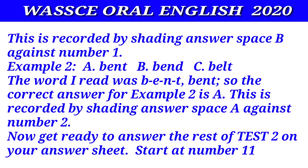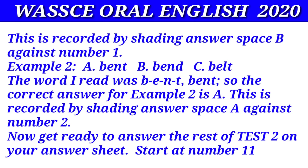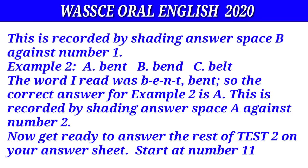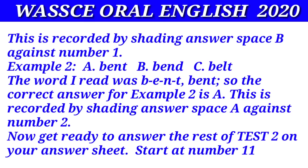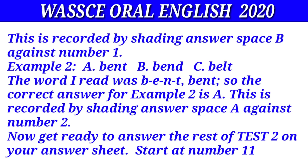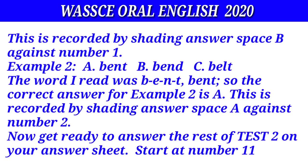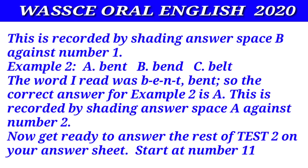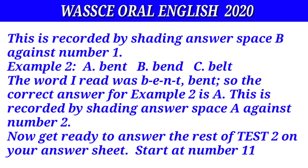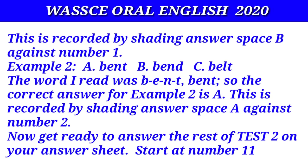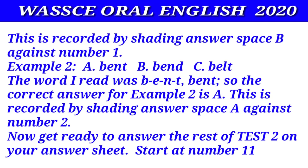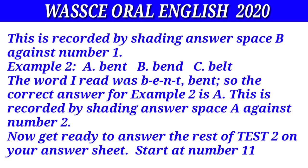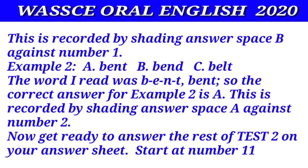Example two: bent. The word I read was B-E-N-T, bent. So the correct answer for example two is A. This is recorded by shading answer space A against number two. Now get ready to answer the rest of test two on your answer sheet. Start at number eleven.